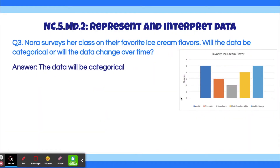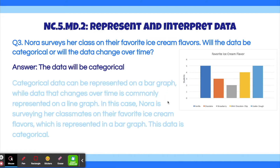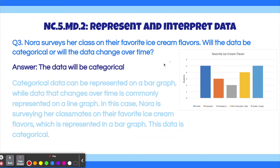The answer is the data will be categorical. Categorical data can be represented on a bar graph, while data that changes over time is commonly represented on a line graph. In this case, Nora is surveying her classmates on their favorite ice cream flavors, which is represented in a bar graph, and so this data is categorical. Additionally, the data cannot change over time because the amount of students that like vanilla or chocolate are going to remain pretty much consistent, which means the data cannot change over time — which leaves the answer that the data is categorical.